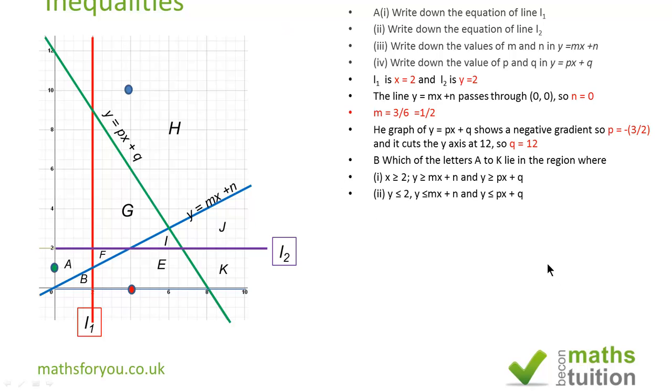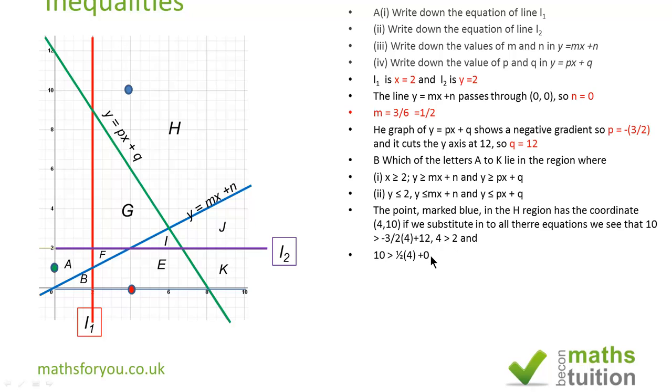If we substitute (4,10) into your equation, y is 10 and x is 4. For y equals px plus q, y is 10 equals minus 3 over 2 times 4 plus 12. That will give you the value of 6, and 6 is less than 10. You know that is valid for there. Is it valid for y equals mx plus n? Substitute y is 10 and x is 4: m is a half plus 0. Half of 4 is 2, and that is less than 10. The blue spot is valid.